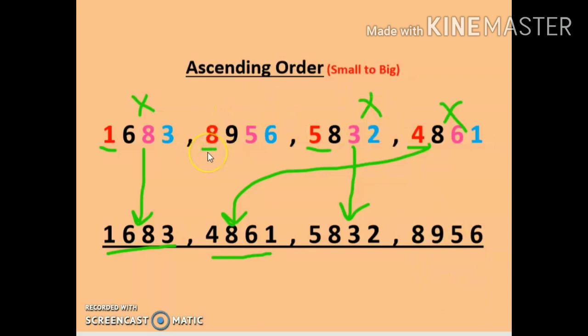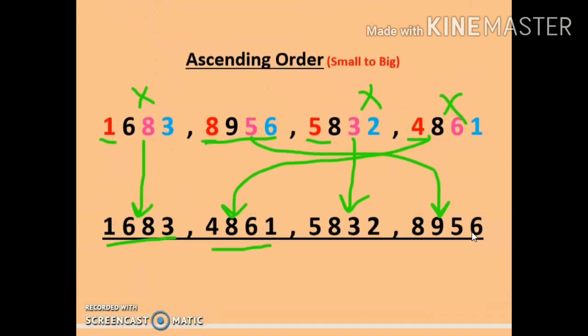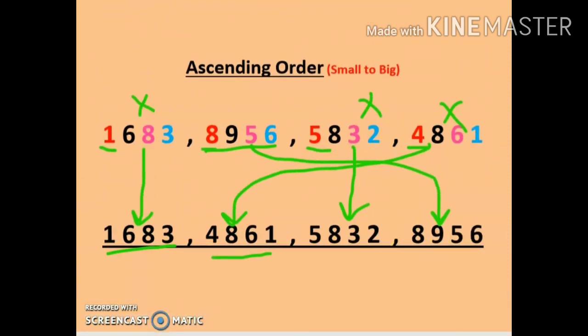And next is 8956, so we will write 8956 at fourth place. These numbers are now arranged in ascending order, from smallest to biggest. Whenever we arrange numbers in ascending order, we just have to focus only on the smallest number.